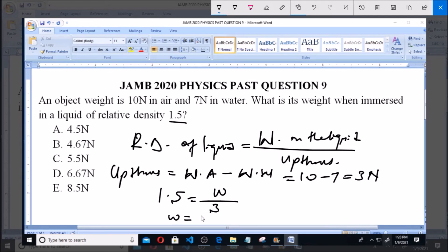That means W is equal to 3 times 1.5, which is equal to 4.5N. So the weight of the object in the fluid is 4.5N and that is option A.